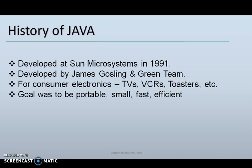The first question that comes into our mind is: what is Java? Java is a programming language and a computing platform for application development. It was first released by Sun Microsystems in 1995 and later acquired by Oracle Corporation.